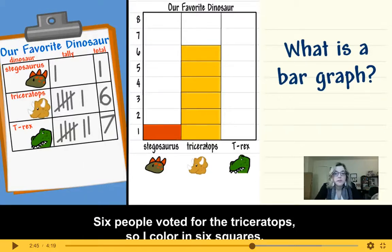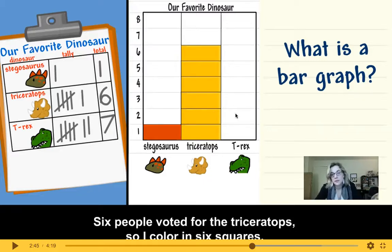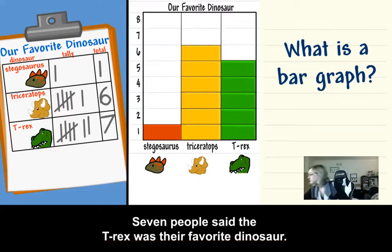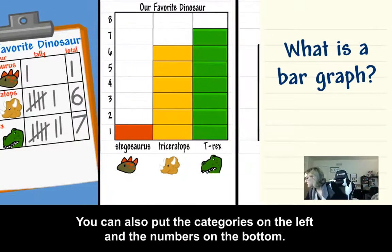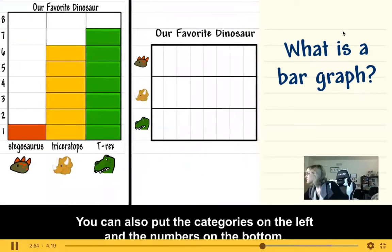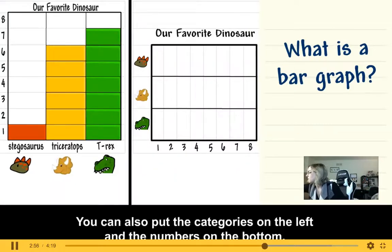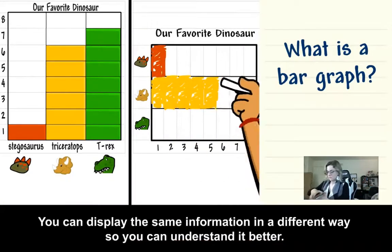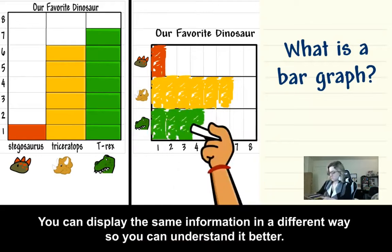The reason it is called a bar graph is because you're coloring in one bar on the graph for every vote that item received. Seven people said the T-Rex was their favorite dinosaur. You can also put the categories on the left and the numbers on the bottom. You can display the same information in a different way so you can understand it better.